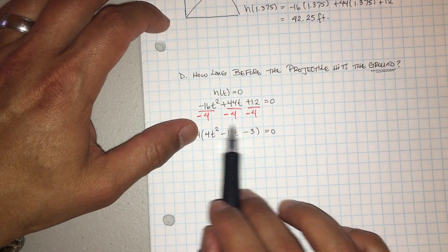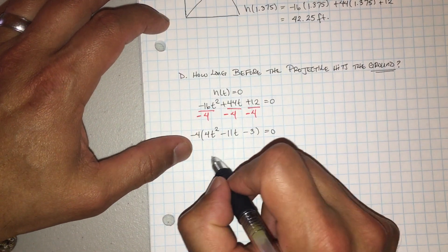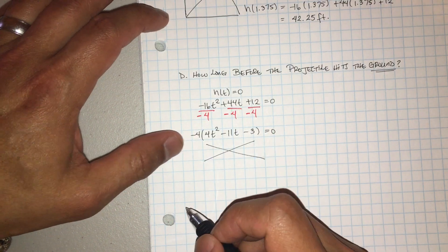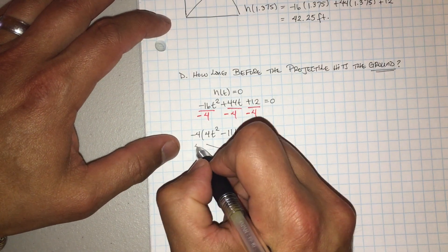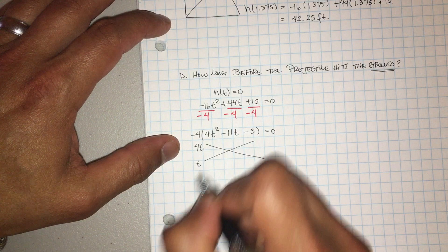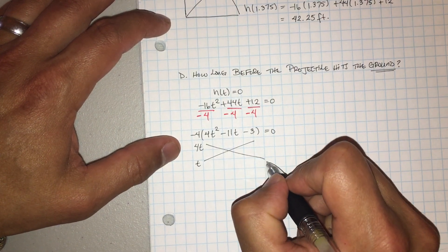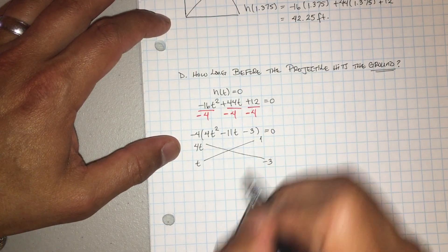And now I can factor this. Ahora puedo tratar de factorizar esto. Okay, so I'll do it the long way. Lo voy a hacer a método largo. Entonces, cuatro t por una t, four t times one t, y aquí voy a usar menos tres y positivo uno.